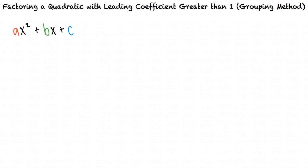When factoring a quadratic with leading coefficient 1, the leading coefficient can be ignored because a equals 1, and 1 times x squared can just be read as x squared. If you need a refresher in this material, please review the factoring a quadratic with leading coefficient 1 topic.